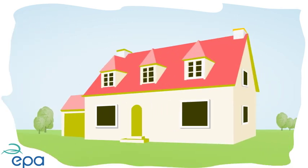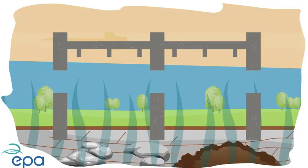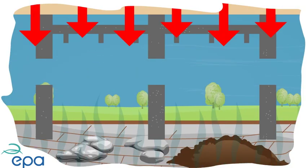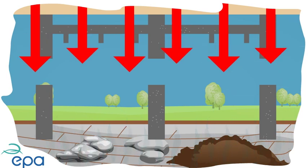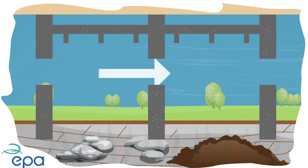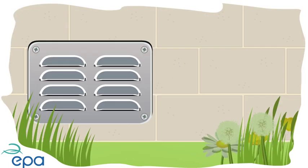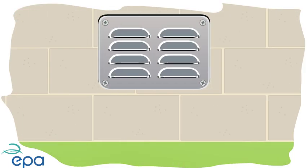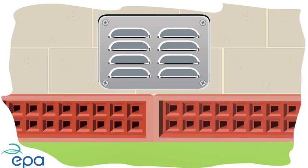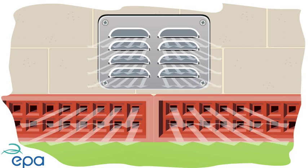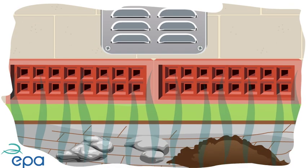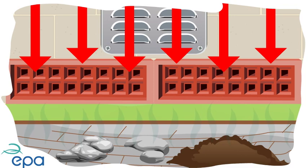If your home has a suspended floor, you can also reduce the amount of radon entering the building by increasing the subfloor ventilation. Clearing or replacing existing subfloor vents, or installing additional vents or air bricks, will increase the flow of air below the floor and so reduce the amount of radon entering your home.